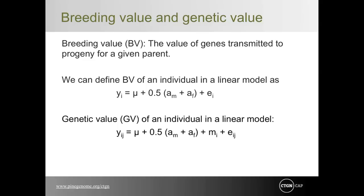The breeding value, BV, is the value of genes transmitted to progeny. In a linear model, breeding value of a tree is the average of parental breeding values of the male, A sub m, and the female, A sub f, plus fixed effects and error E sub i. The genetic value is the value of genes to the parent tree itself; it includes both additive and non-additive, or dominance, effects. Dominance effects cannot be passed on to progeny by breeding. The difference between genetic and breeding value is therefore largely dominance deviation, assuming epistatic effects are negligible.